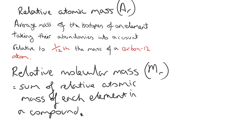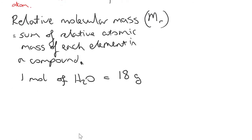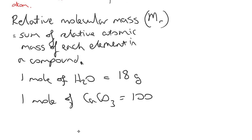The reason this is important is because we can always calculate the number of moles of substance we have based on the relative molecular mass and the actual mass in grams. Because one mole of any substance will always weigh the same as its MR — its relative molecular mass — in grams. So one mole of H₂O: the MR of H₂O is two hydrogens plus oxygen, which is 18 grams. One mole of calcium carbonate equals 40 plus 12 plus 48, which is 100 grams.